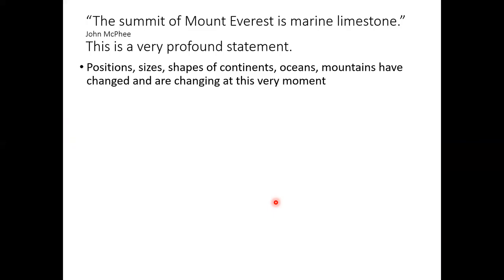The positions, shapes, and sizes of continents, oceans, and mountains have all changed throughout time, and even as we speak, they are changing. John McPhee is a fairly famous author who wrote books related to geology, including Assembling California — a very easy read I encourage you to look into. He wrote a series of books tracing the geology of the U.S. across Interstate 80. He was once asked to sum up the weirdness and awesomeness of how Earth works in one sentence.